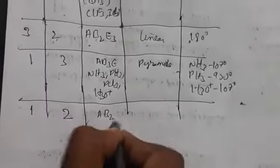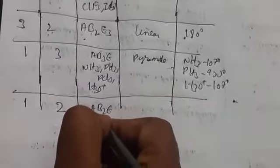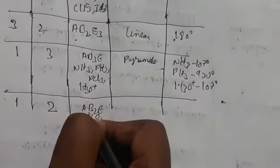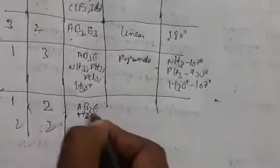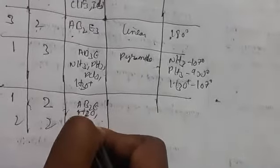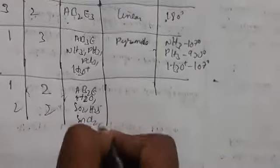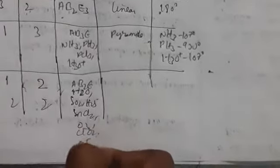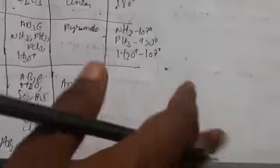With one lone pair and two bond pairs (AB2E), the shape is V-shape, bent, or angular. For two lone pairs and two bond pairs (AB2E2), the shape is also angular. Examples include H2O, SO2, H2S, SnCl2, O3, ClO2, and OF2. Different molecules give different bond angles within this category.